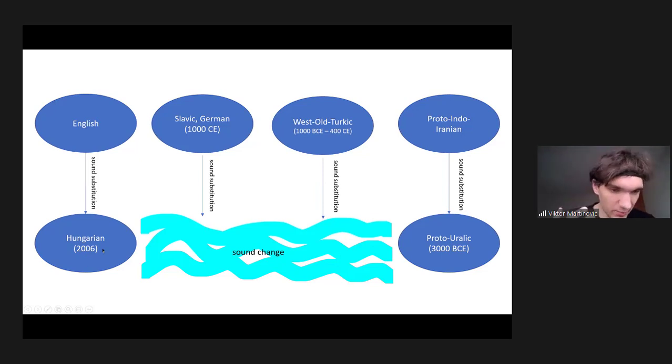And so this is one stage that we can reconstruct. We have present day Hungarian. I wrote there 2006 because the word list I used is from a dictionary from that year. And then you know that you have stages of sound changes in between. But those sound changes, they don't really point to a concrete Proto-language anymore. It's just that's why I painted these kind of waves. It's like a flow.